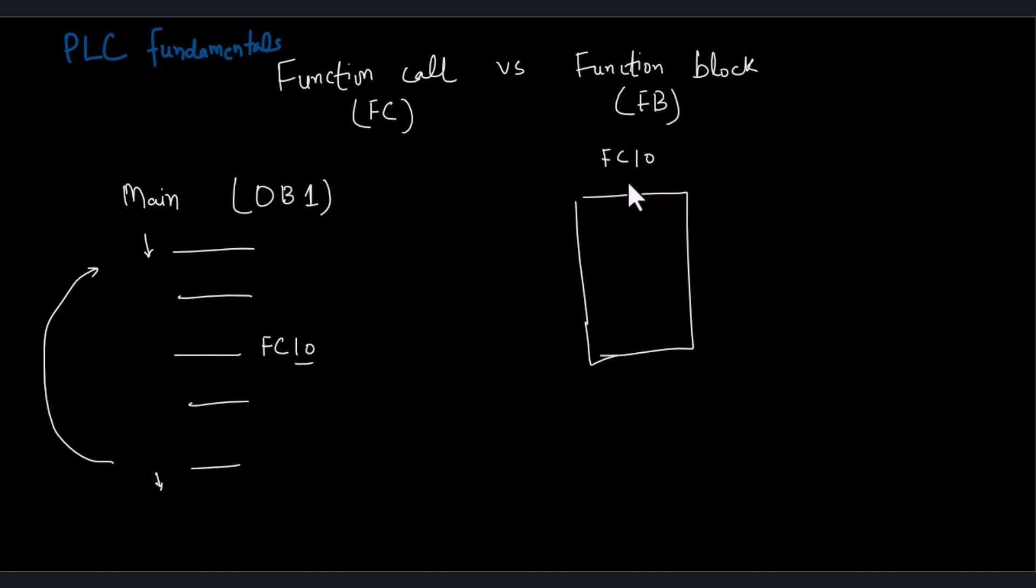This is the convention that a number will be assigned to each function call and function block as well. What happens whenever the PLC scan cycle reaches at this specific instruction, a call to FC10 is made.